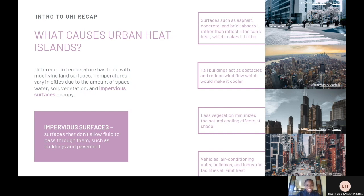Impervious surfaces are surfaces that do not allow fluid to pass through them, such as buildings and pavements. On the right-hand side, it shows different images and different facts about the causes of urban heat islands.